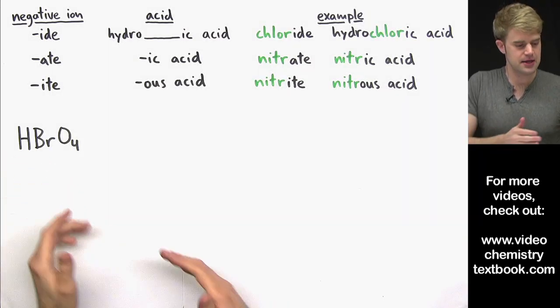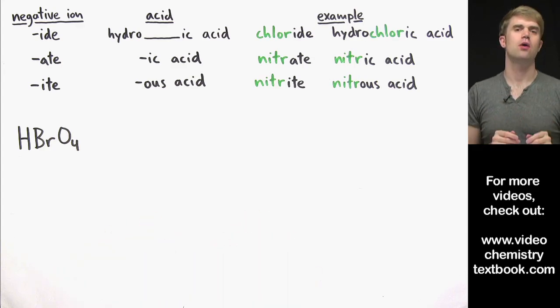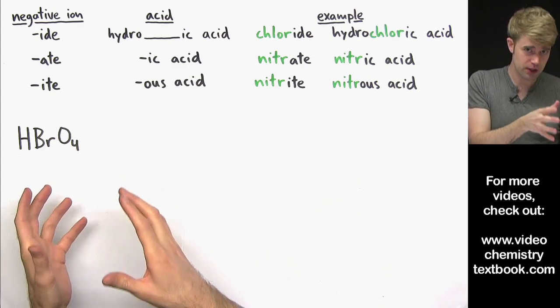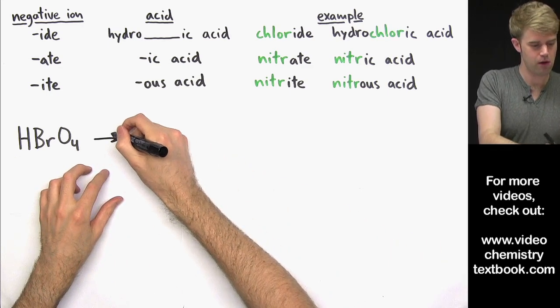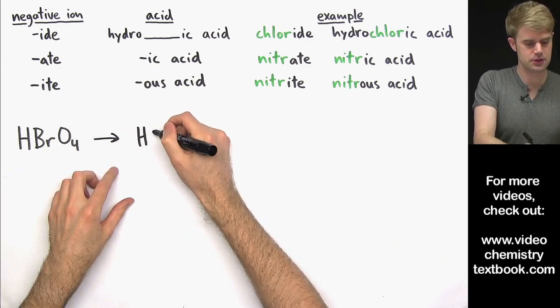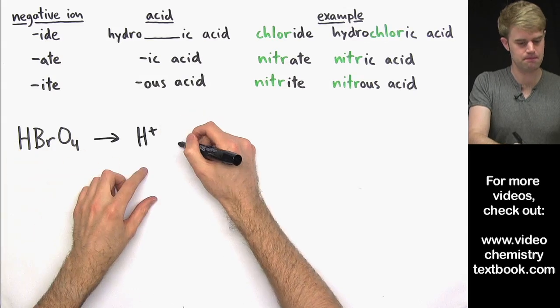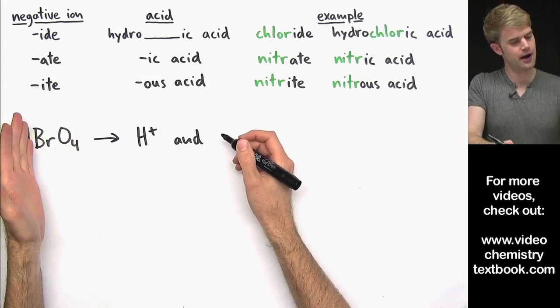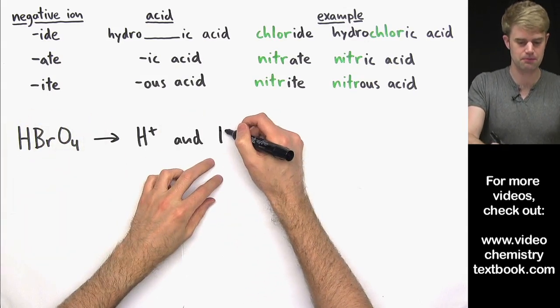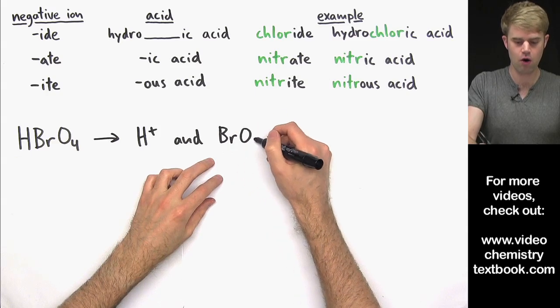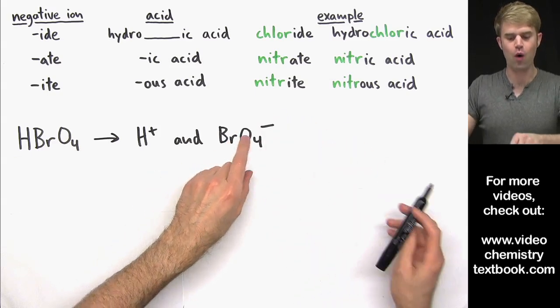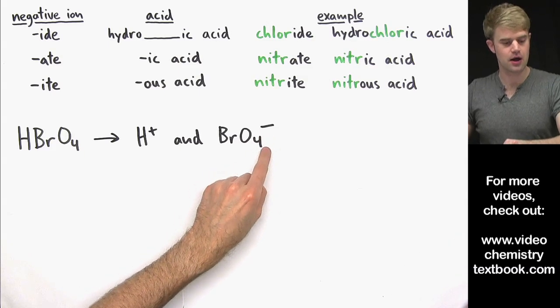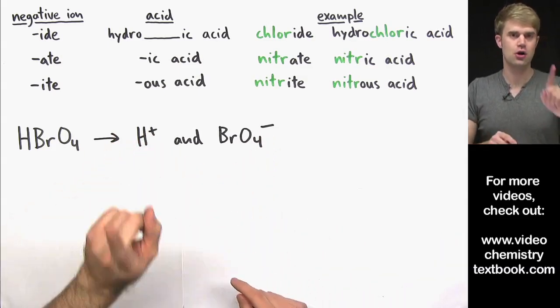HBrO4. To name this acid, the first thing I want to do is break it up into its H+ part and its negative ion part. So I've got an H+, that's the H there, and then the negative ion part is everything else. It's going to be BrO4 and the charge on this ion is going to be 1 minus. I need 1 minus here to balance out the 1 plus from the H+.